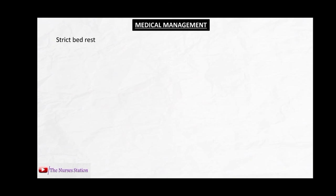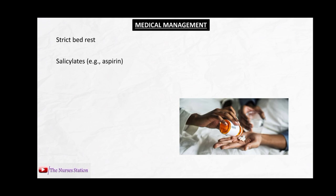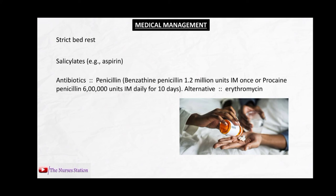For medical management, strict bed rest is advised until fever and other acute symptoms subside. Salicylates like aspirin are given for pain relief and fever. Antibiotics are administered to eradicate the group A streptococcal infection; penicillin is the drug of choice — benzathine penicillin 1.2 million units IM once, or procaine penicillin 600,000 units IM daily for 10 days. If the patient is allergic to penicillin, erythromycin is given alternatively. Corticosteroids may be used for inflammation, and if the CNS is involved with convulsions, anticonvulsants like valproic acid are used.